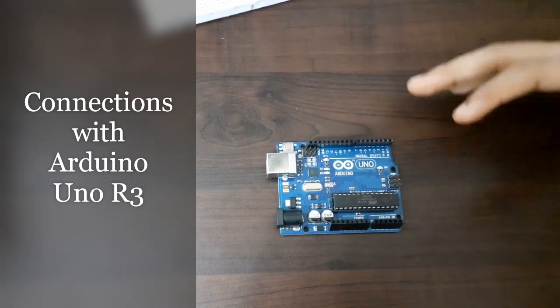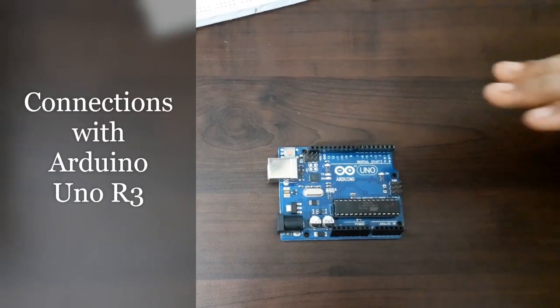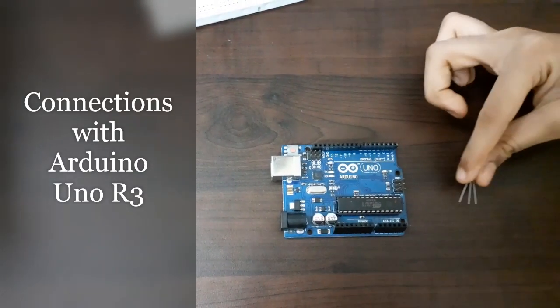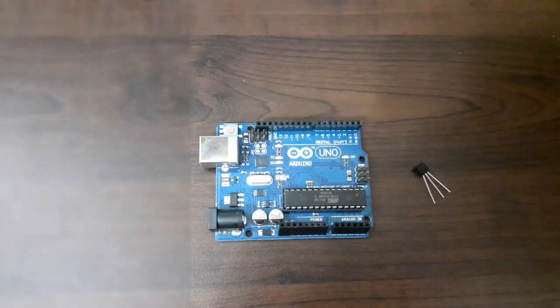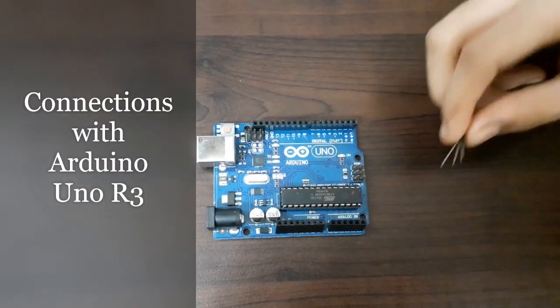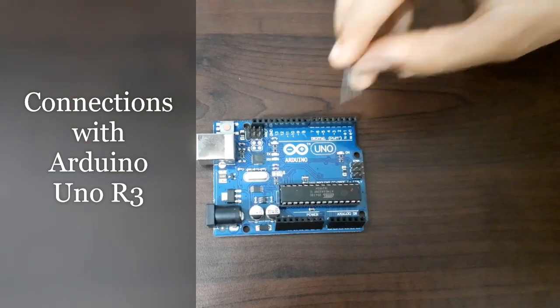Now, we are going to use Arduino Uno R3 board to measure temperature using LM35. Now, let me explain how to make the connection of LM35 to the Arduino board.